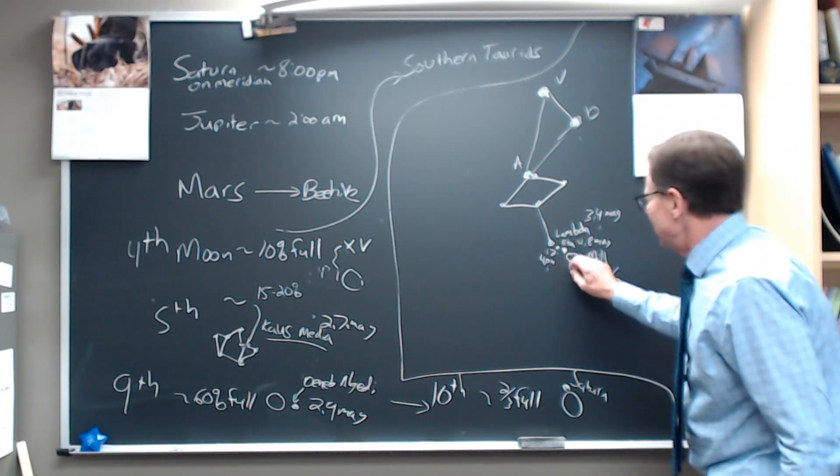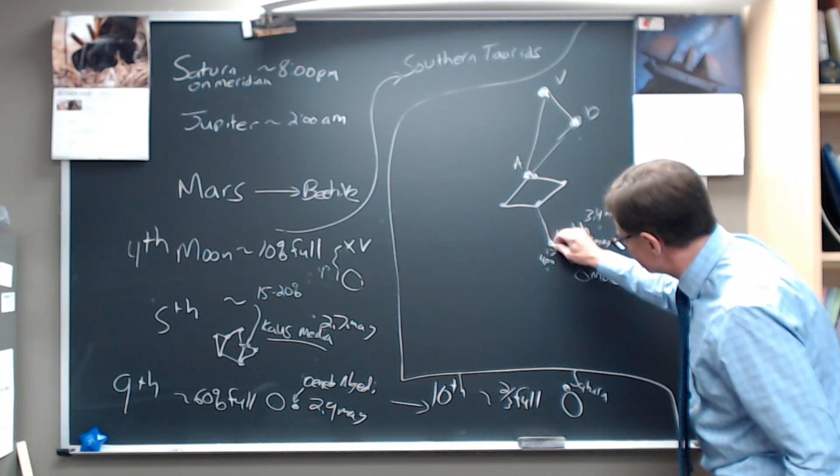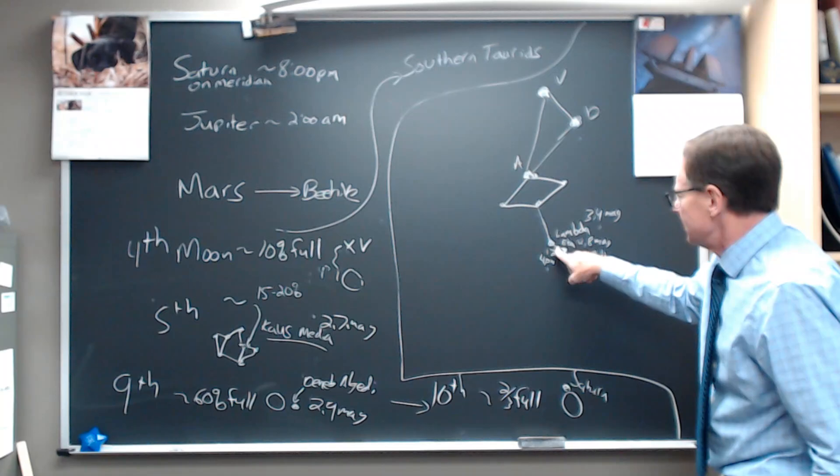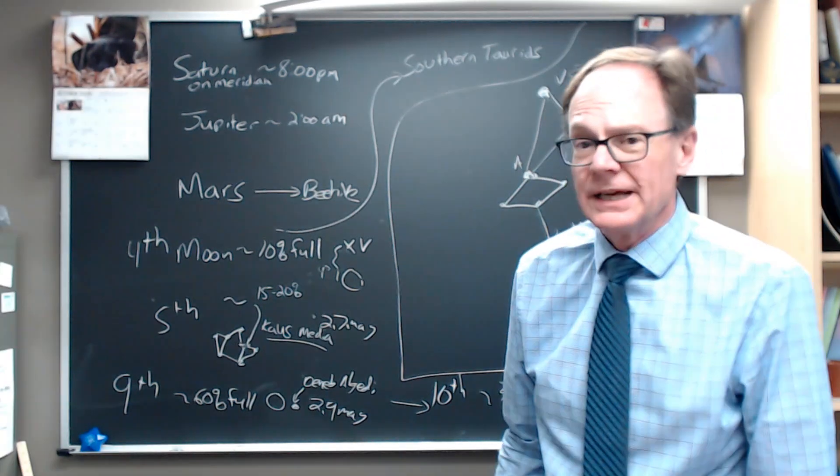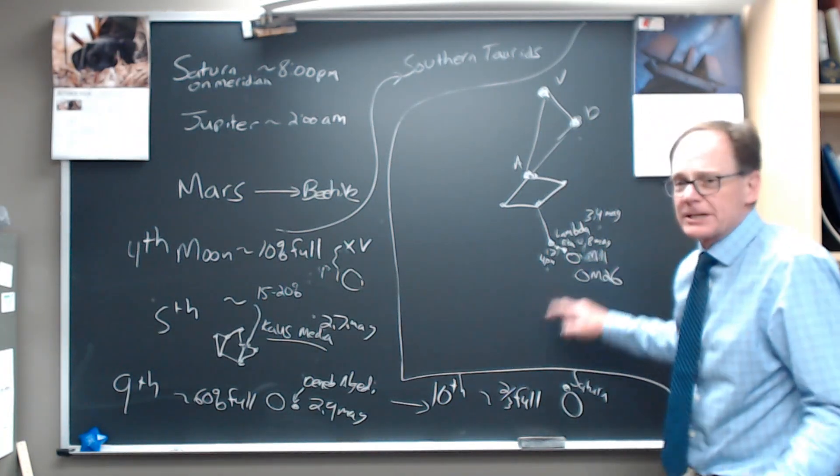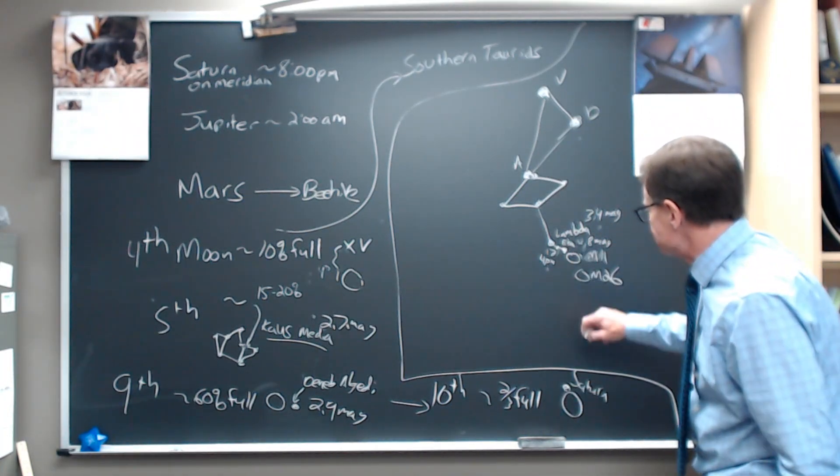And next to it is Eta. And Eta, so you come down the tail and you just drop 3 stars over like that. You go to a 4th magnitude and a 4.8 magnitude star. Now that's getting on the edge of what we're able to see. We should be able to see it, but you're going to have to have some pretty good skies to be able to see it.